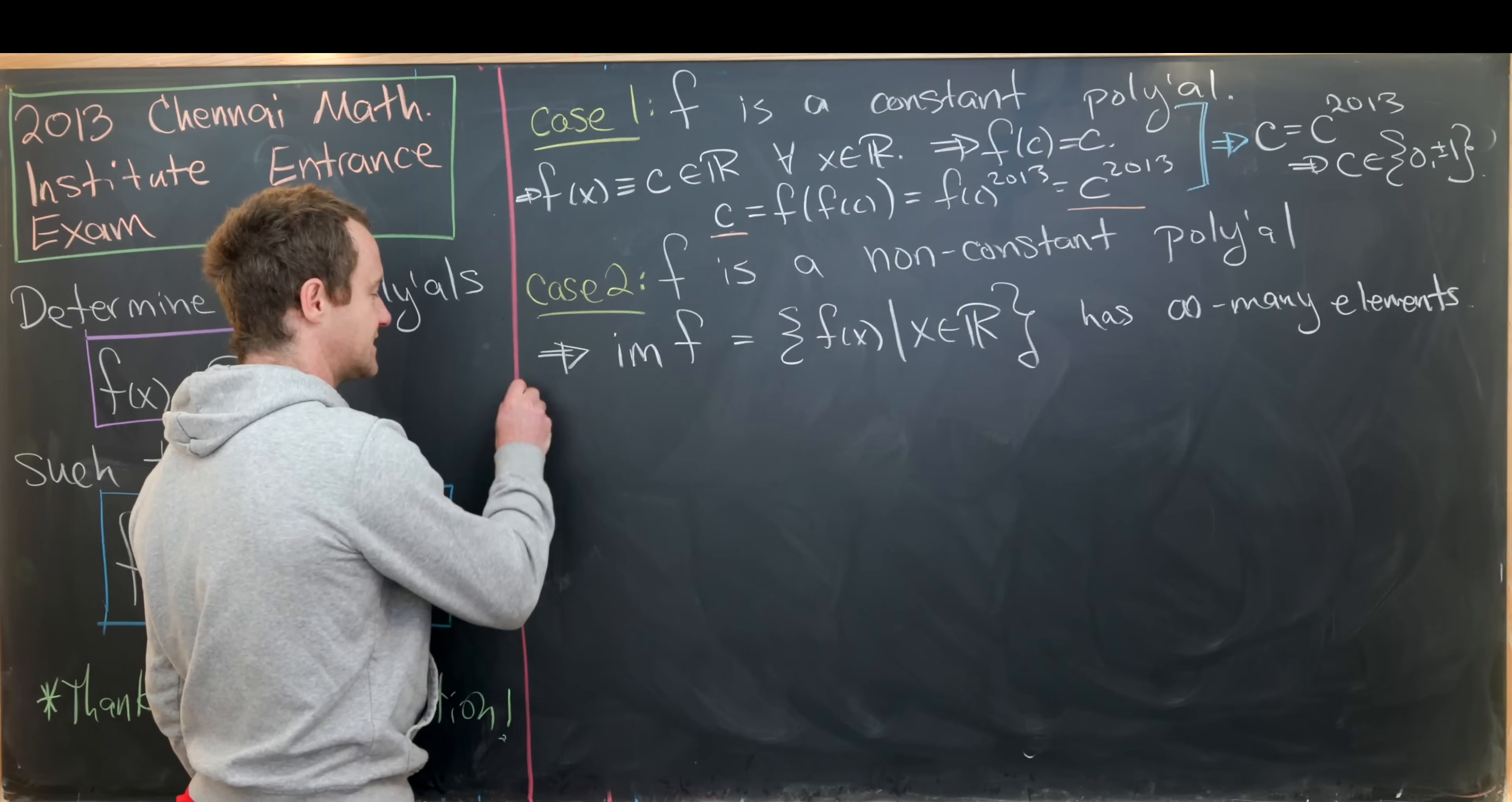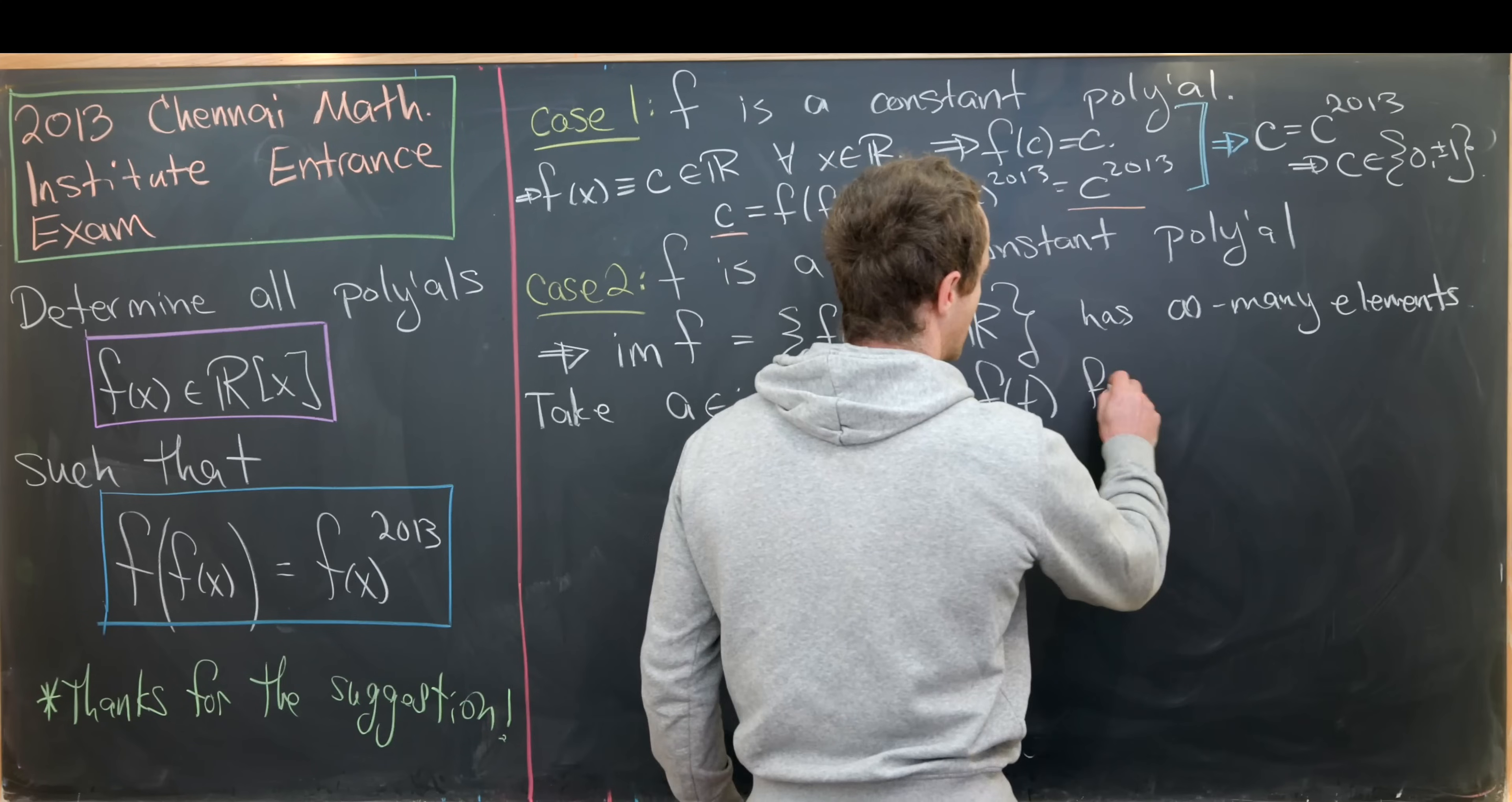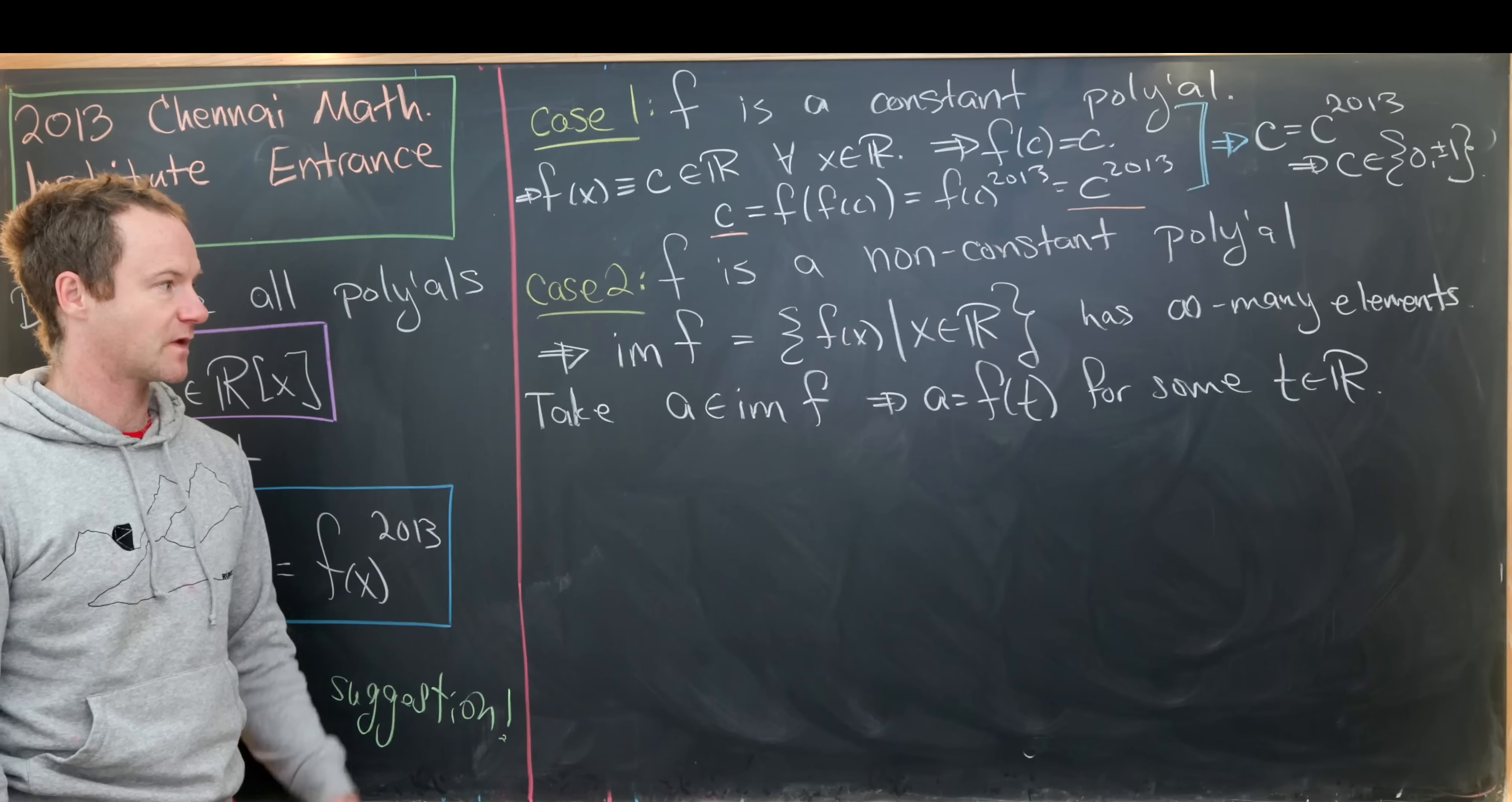Now that we've got this, let's take an arbitrary a in the image of f. But let's notice that that means that a equals f of t for some real number t. That's the definition of being inside the image: you can be hit by the function for some element of the domain. Okay good.